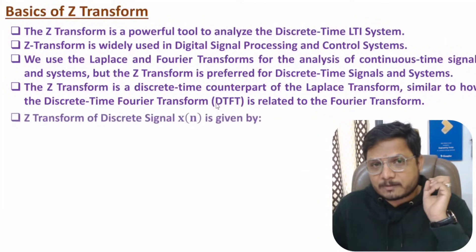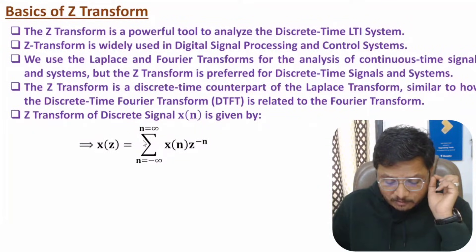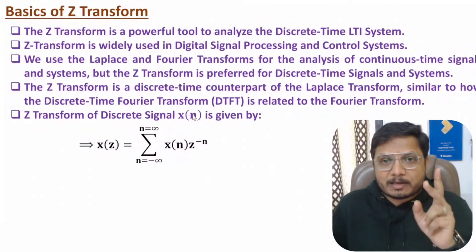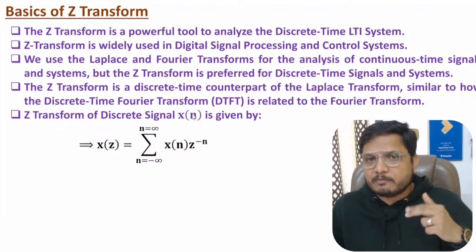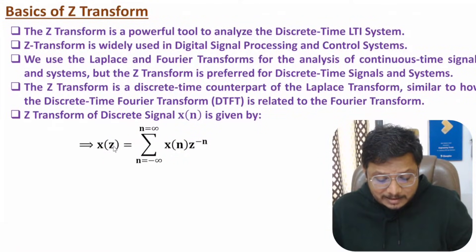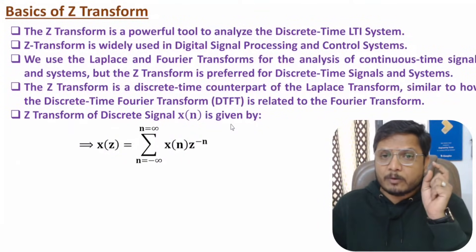The basic definition of Z-transform: if you have signal x(n) and want its Z-transform X(z), that is the summation from n = minus infinite to plus infinite of x(n) into z to the power minus n. Using this definition we can identify X(z) from x(n), and this equation is quite helpful in solving problems.